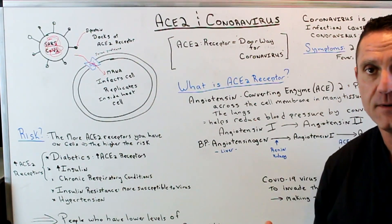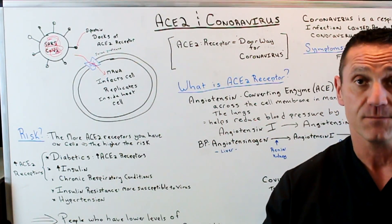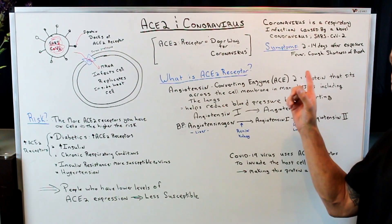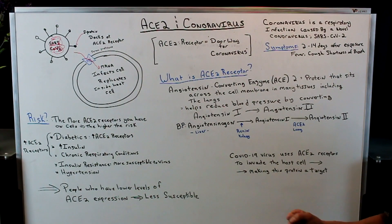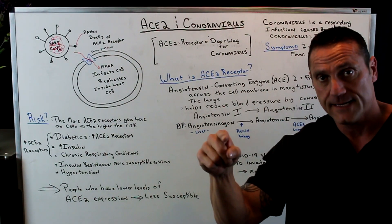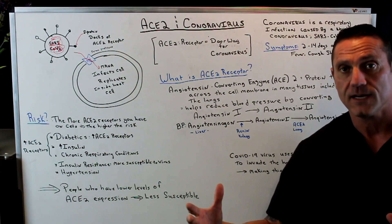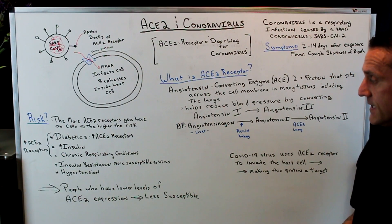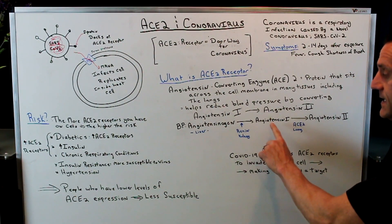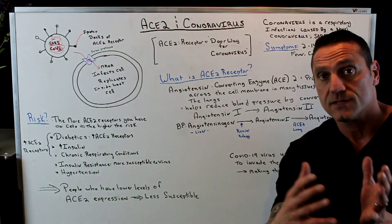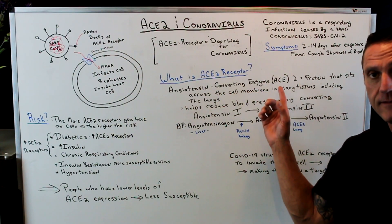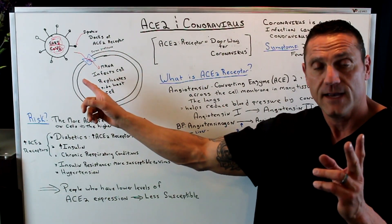What is the significance of the ACE2 receptor? You may have heard about ACE inhibitors from blood pressure medication. The ACE2 receptor — the angiotensin converting enzyme 2 — is a protein that sits across the cell membrane in many tissues, including the lungs. It helps reduce blood pressure by converting angiotensin 1 to angiotensin 2. Angiotensinogen is produced in the liver, converted in the kidneys by renin to angiotensin 1, and then once it goes through the lungs, it gets converted to angiotensin 2 by the angiotensin converting enzyme 2 — hence the name, ACE2 receptor.